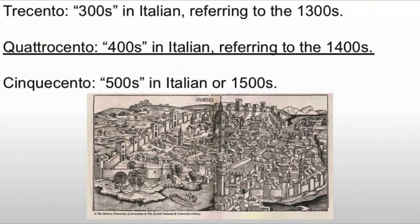Now, we are in what's known as the Quattrocento, referring to the 1400s. When we're talking about the Italian Renaissance, we talk about the Trecento, the Quattrocento, and the Cinquecento.